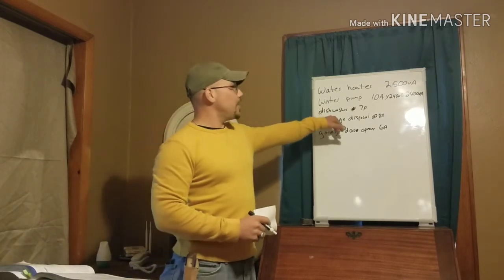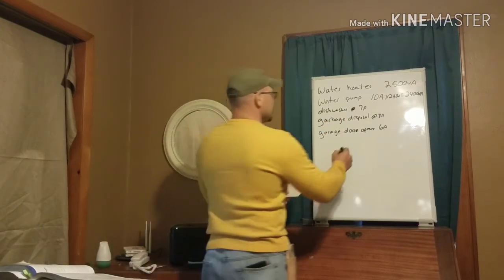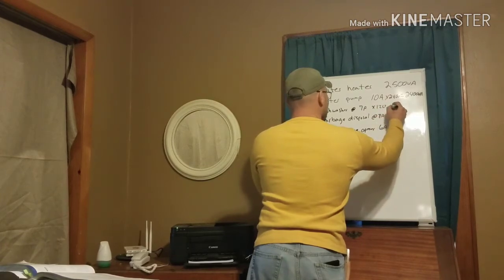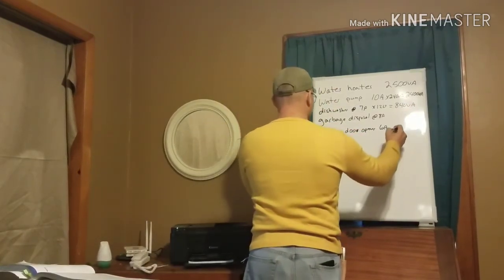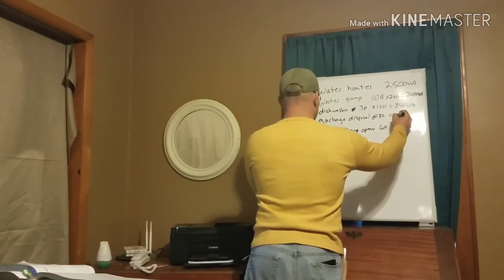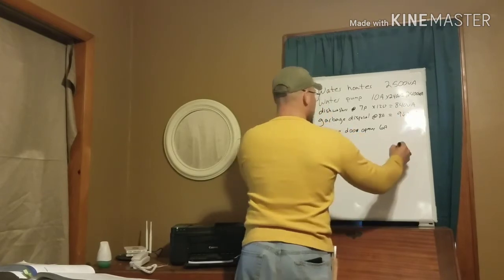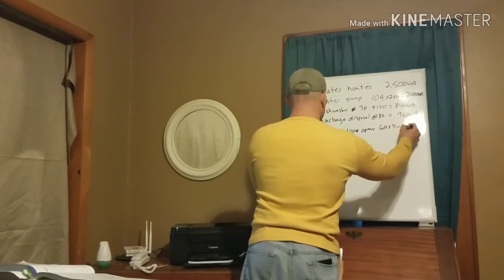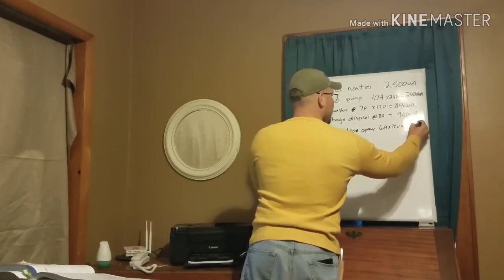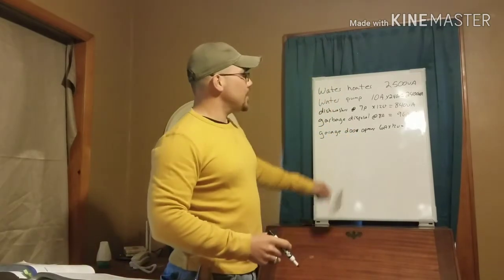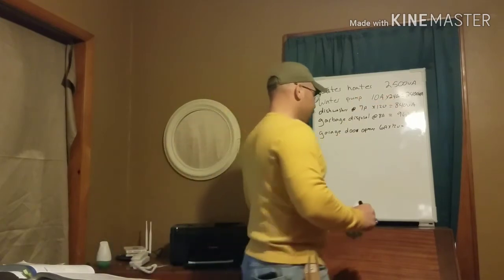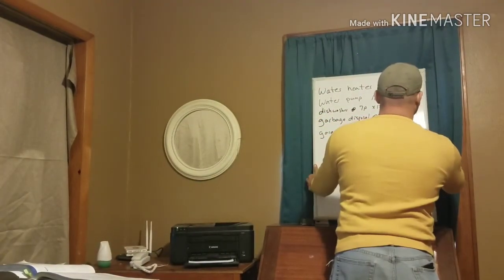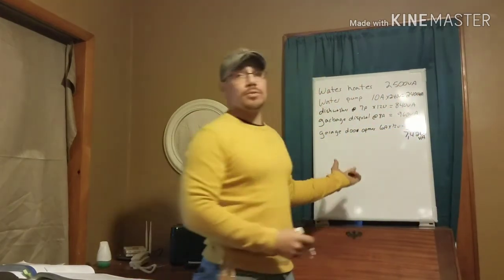Those last three — dishwasher, garbage disposal, and garage door opener — are all 120-volt appliances, so it's important to know the voltage each appliance takes. Multiplying each by 120 volts: 7 amps × 120 = 840 VA; 8 amps × 120 = 960 VA; 6 amps × 120 = 720 VA. Once we convert all fastened-in-place appliances to VAs we can add them up, giving us a total of 7,420 VA.